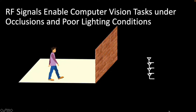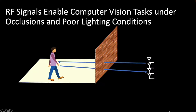There is a growing literature demonstrating the feasibility of using radio frequency signals to enable key computer vision tasks in the presence of occlusions and poor lighting. It leverages the fact that RF signals traverse occlusions like walls and reflect off the human body to provide information to track people.